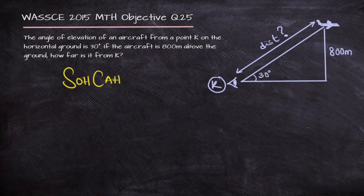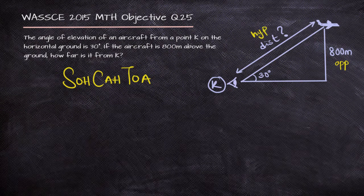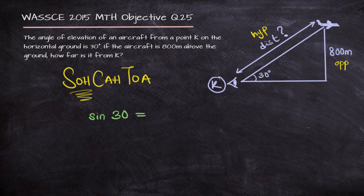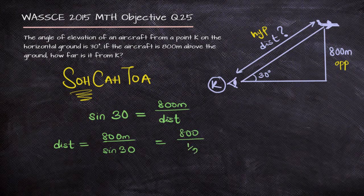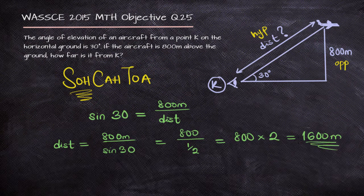Recalling SOHCAHTOA, considering angle 30, we have the opposite and we are looking for the hypotenuse, so sine relates to this question. Sin 30 is opposite — which is 800 meters — over the hypotenuse, which is the distance. Cross-multiplying, distance is 800 meters over sin 30. Sin 30 is a half, so we have 800 over 1/2. That 2 comes up so that we have 800 times 2, which equals 1,600 meters. That is how far K is from the airplane.